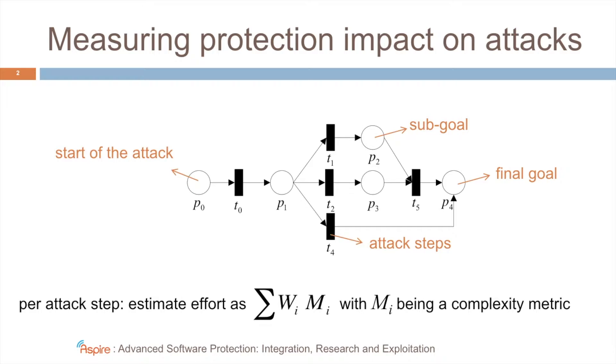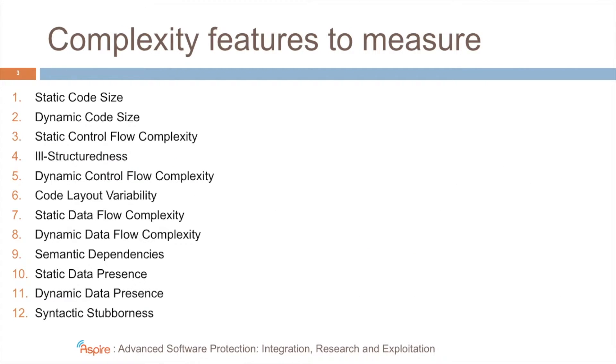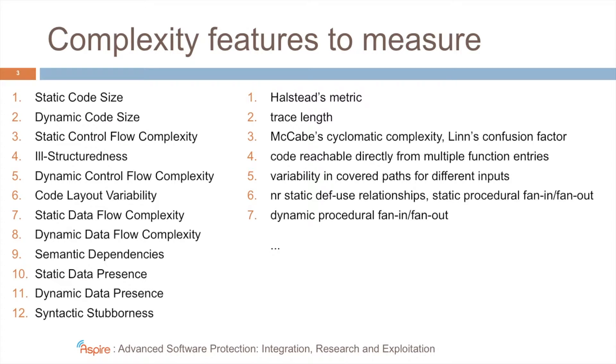So which complexity metrics should we use? Well, in our project, we've defined 12 categories of complexity metrics, and basically these are features that we want to measure. And for all of them, we also proposed some concrete metrics. For example, Halstead's metric allows you to compute the size of a program, not just the number of instructions, but it's a combination of the number of instructions, the number of operands, and so on. And there are many other concrete metrics that we proposed, some of them from literature, some of them that we propose ourselves. We cannot discuss them all here, but you can look them up in deliverable 4.06. That's a public report.